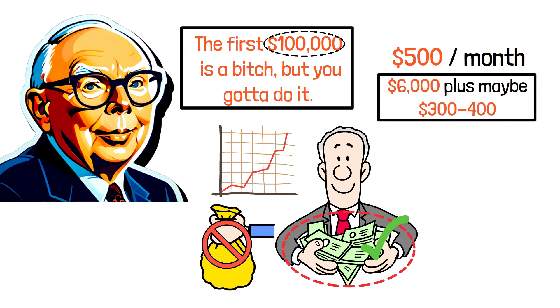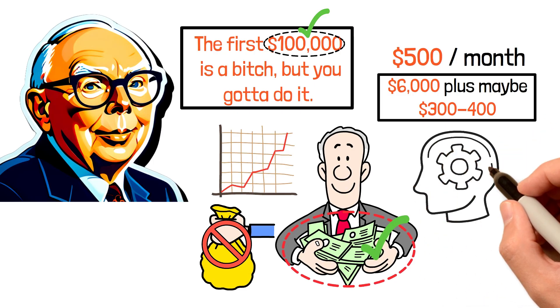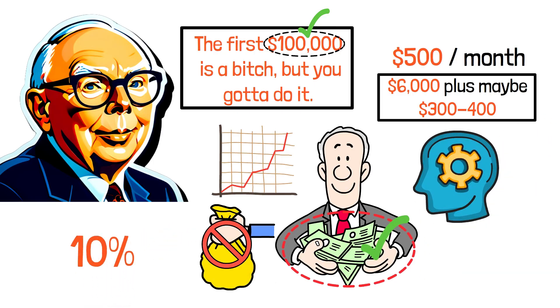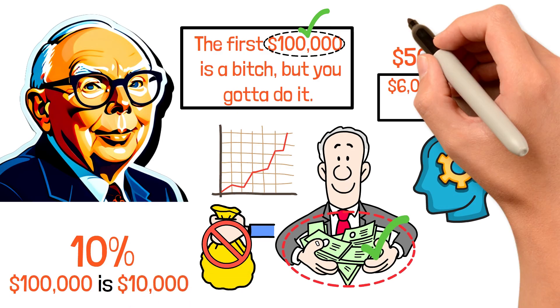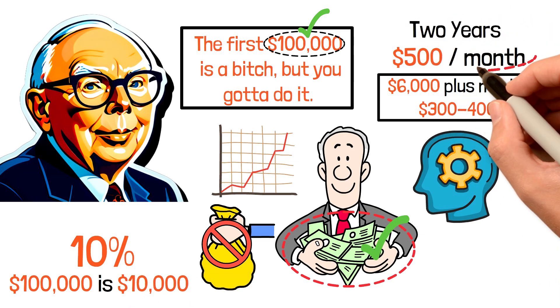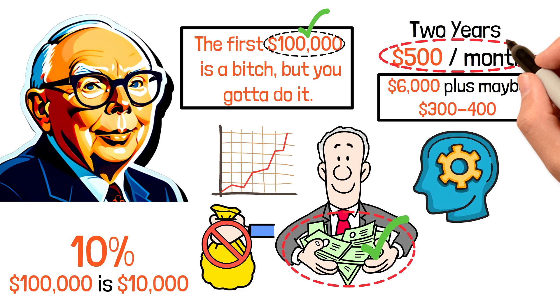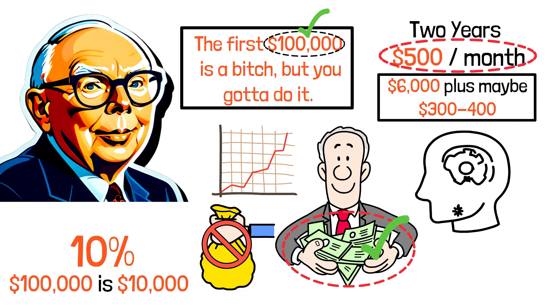But once you hit $100,000, the dynamic completely changes. A 10% return on $100,000 is $10,000. That's nearly two years of $500 monthly contributions happening automatically. Your money is now working as hard as you are.